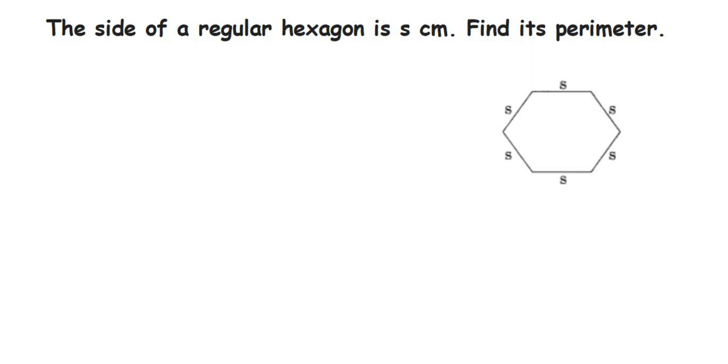Hello everyone. Here's a question on hexagons. The side of a regular hexagon is s centimeters. Find its perimeter. Note that it is s, not 5s centimeters. A hexagon is a polygon with six sides.